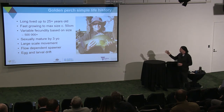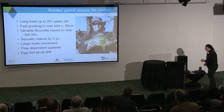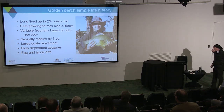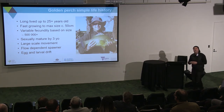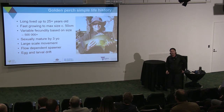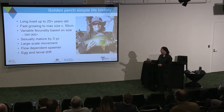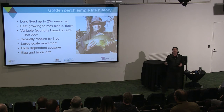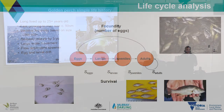Golden Perch are a long-lived fish species. They grow relatively quickly and exhibit variable egg production — variable fecundity — up to over half a million eggs. They are sexually mature by three years of age, exhibit large-scale movement, are flow-dependent spawners, and their eggs and larvae drift in the flow. So there are a bunch of elements to the life history that are dependent upon flow.